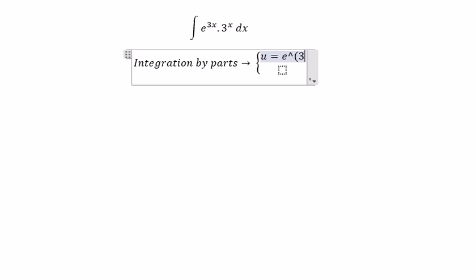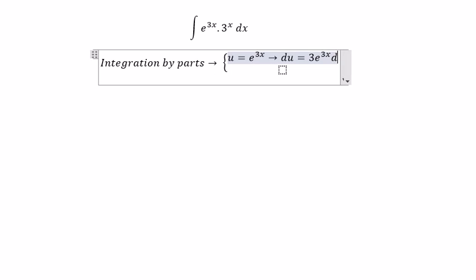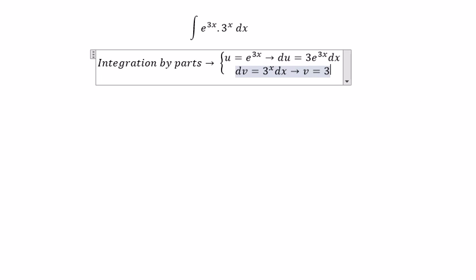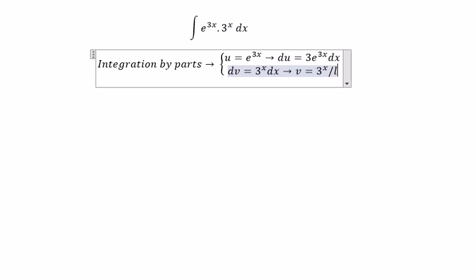du equals 3e to the power of 3x dx. dv equals 3 to the power of x dx. So we get v equal to 3 to the power of x over ln of 3.